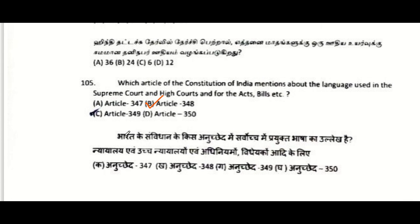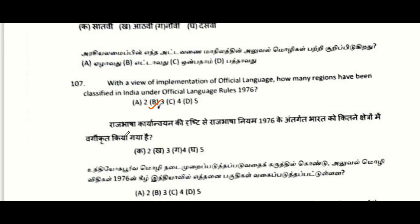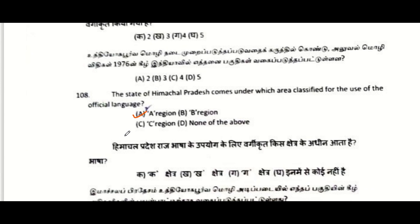Which article of the Constitution of India mentions the language used in the Supreme Court, High Courts, and for acts and bills: Article 348. Which schedule of the Constitution mentions the official language of states: the Eighth Schedule. Under Official Language Rule 1976, how many regions have been classified in India: three — A, B and C. The state of Himachal Pradesh comes under which area: Region A.